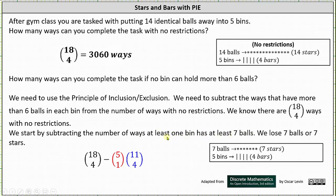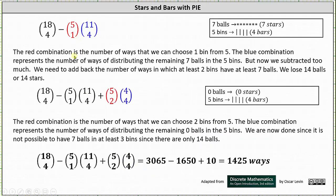We take seven balls and place them into one of the bins, so we lose seven stars, leaving us with seven stars and four bars. The number of ways at least one bin has at least seven balls is 5 choose 1 times 11 choose 4. The red 5 choose 1 is the number of ways to choose one bin from five, and the blue 11 choose 4 is the number of ways of distributing the remaining seven balls across the five bins, again because we have seven stars and four bars.